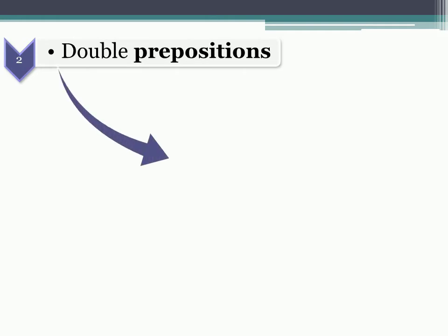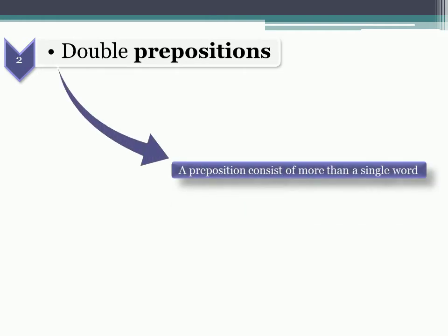Double prepositions. What are double prepositions? It is a preposition which consists of more than a single word, like onto, upon, into.